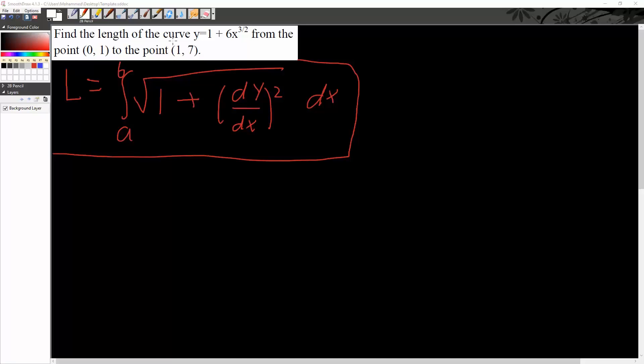Okay, in this question we want to find the length of the curve y equals 1 plus 6x raised to the 3 halves from the point (0,1) to the point (1,7).